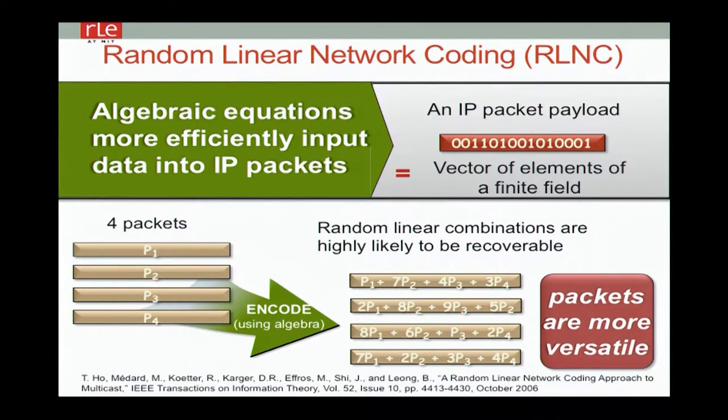What we're looking at is taking packets, randomly weighting them by numbers chosen over a finite field. An IP packet is just a vector of numbers, usually over a finite field. 2 to the 8 is a good choice of a field. So packets now become more versatile and there are a lot of different things you can do.